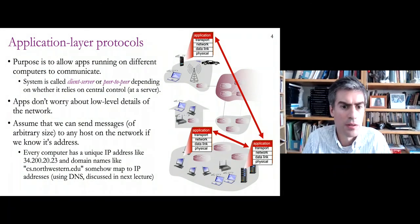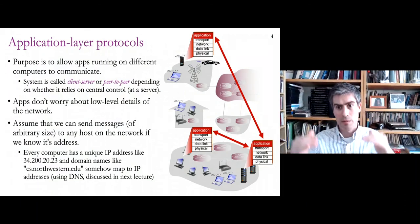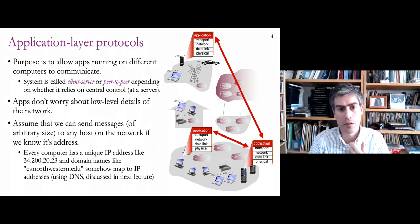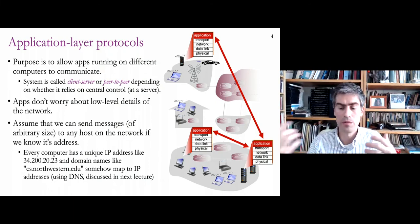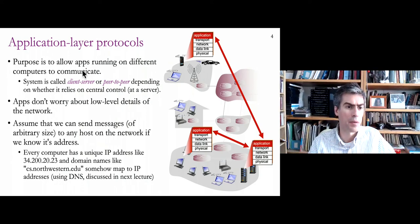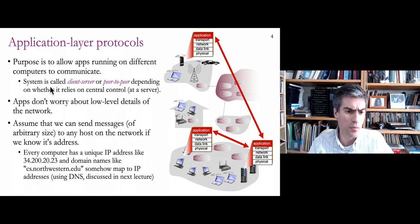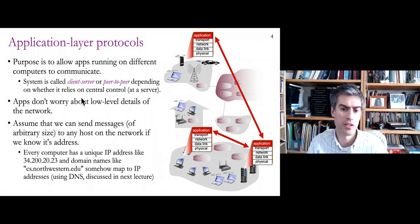Today we're talking about application layer protocols, taking a top-down approach to networking. Software wants to be able to use a network to communicate with other instances of the same software or with servers storing shared data. The purpose of application layer protocols is to allow apps running on different computers to communicate. There are two different classes of networked applications: client-server applications and peer-to-peer applications.